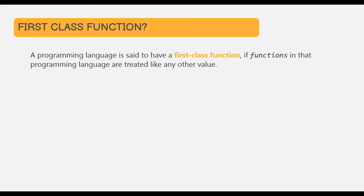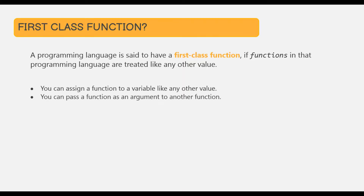A programming language is said to have first class functions if functions in that programming language are treated like any other value. For example, you can assign a function to a variable, you can pass a function as an argument to another function, and you can even return a function from another function. When we can do all these things, we say that functions are treated like first class citizens, and they are first class functions.